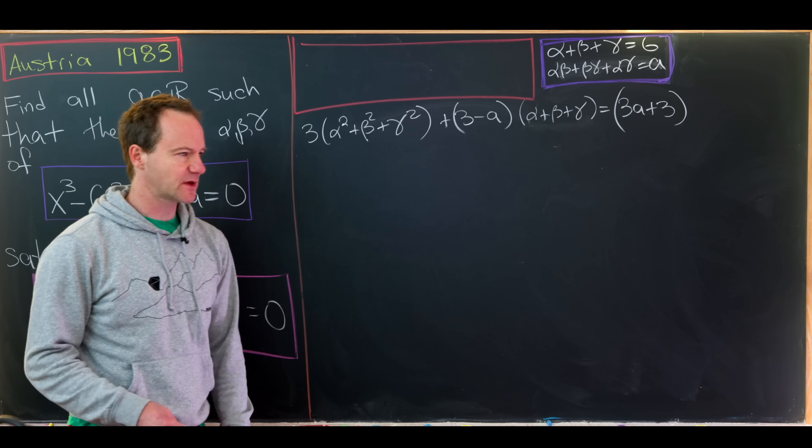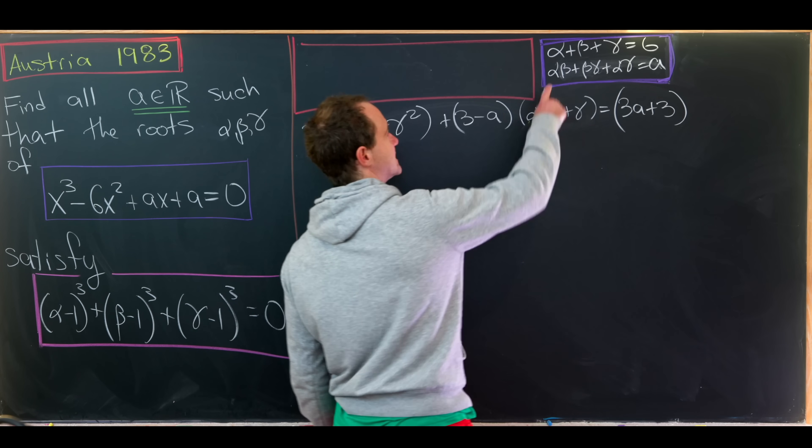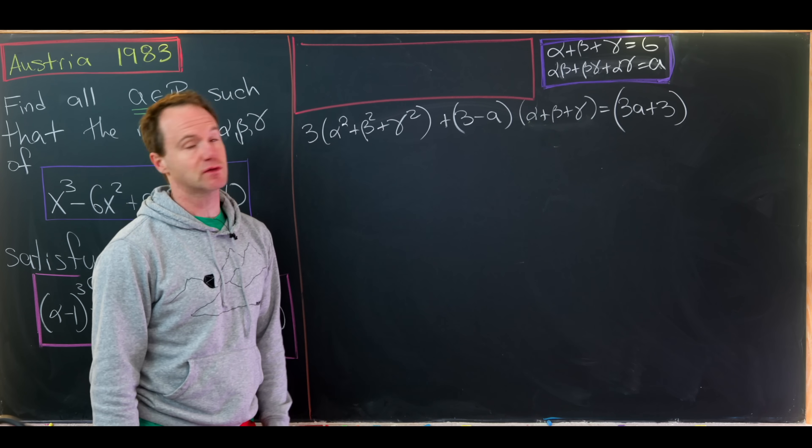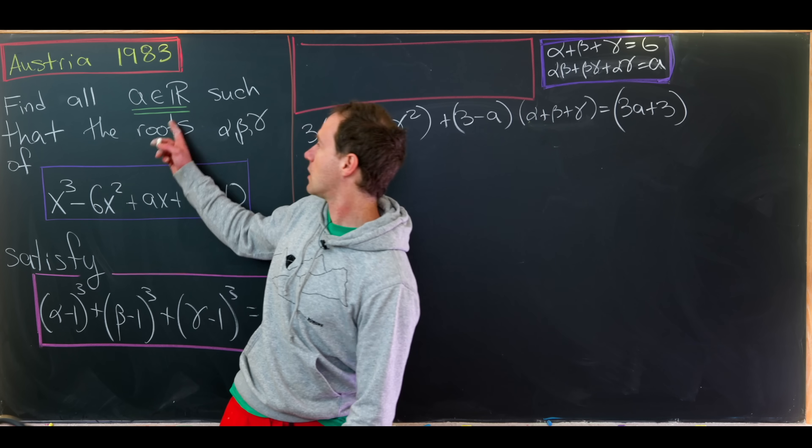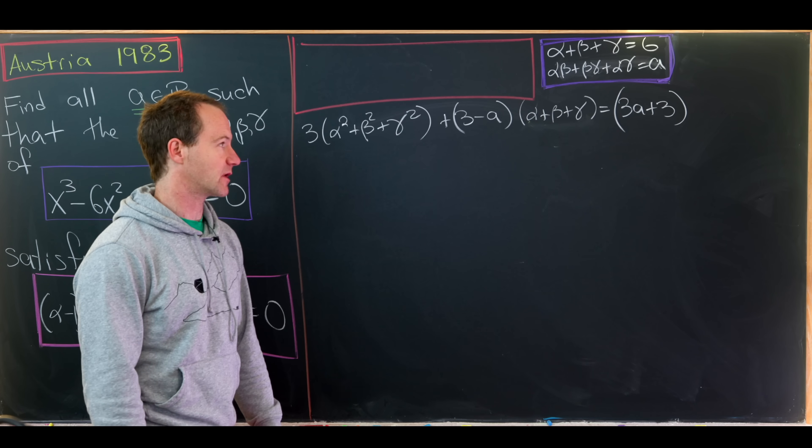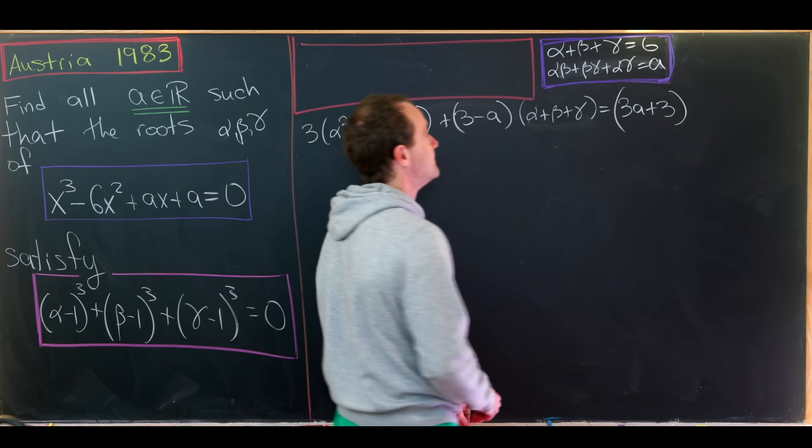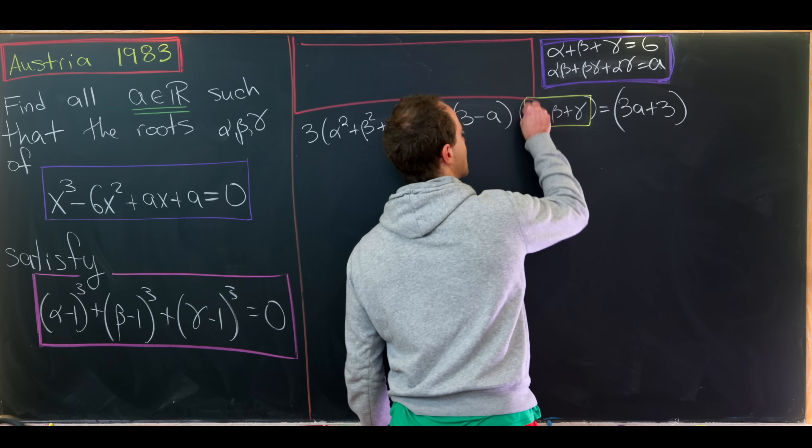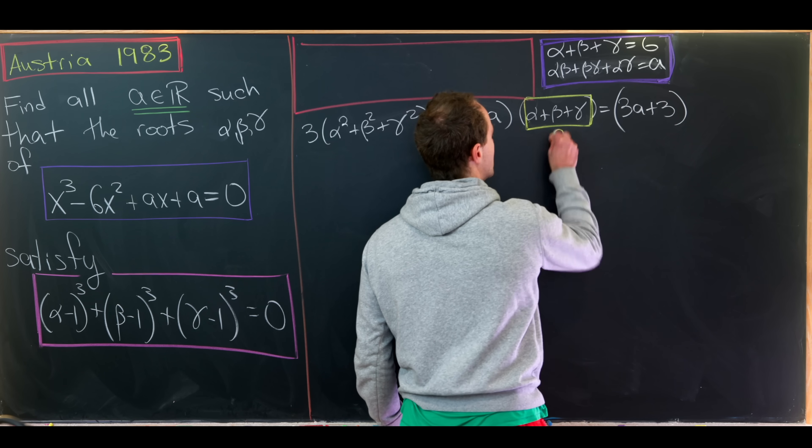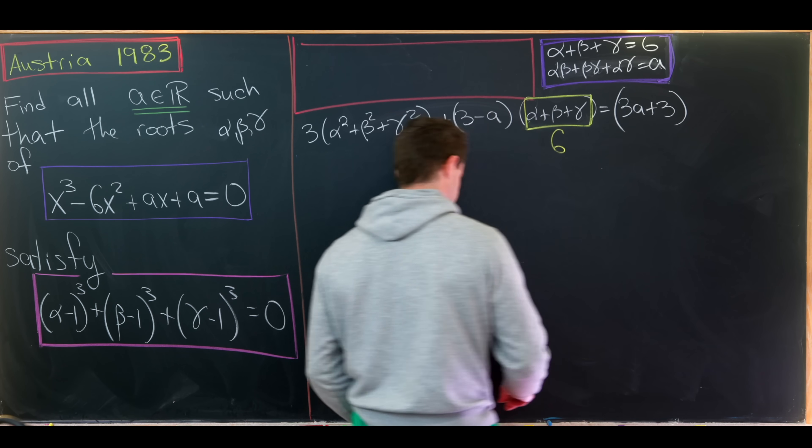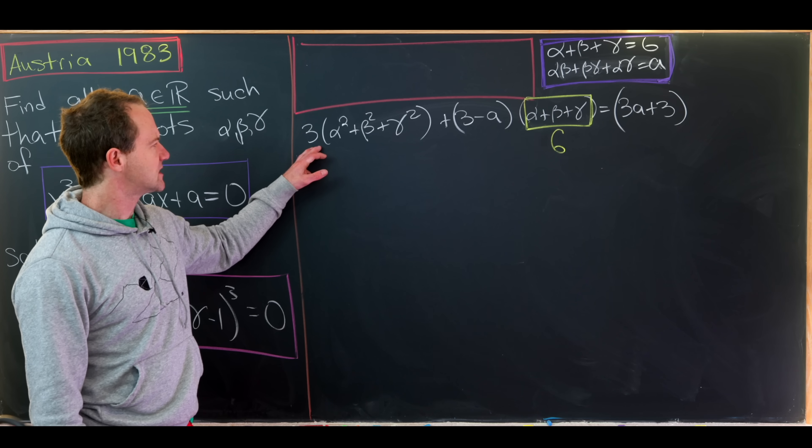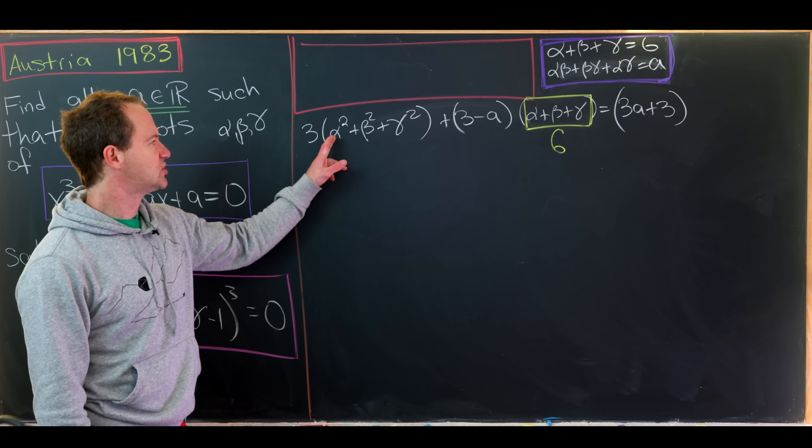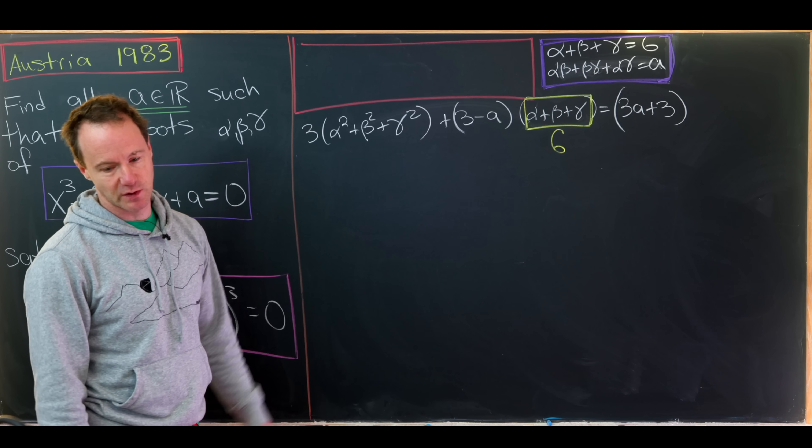But then furthermore, using something called Vieta's formula, we realized that alpha plus beta plus gamma was 6, and then the sum of these quadratics was equal to our number a. Let's recall our goal is to find this number a. So immediately, we can use this first equation to replace this stuff that I'm boxing in yellow with the number 6.